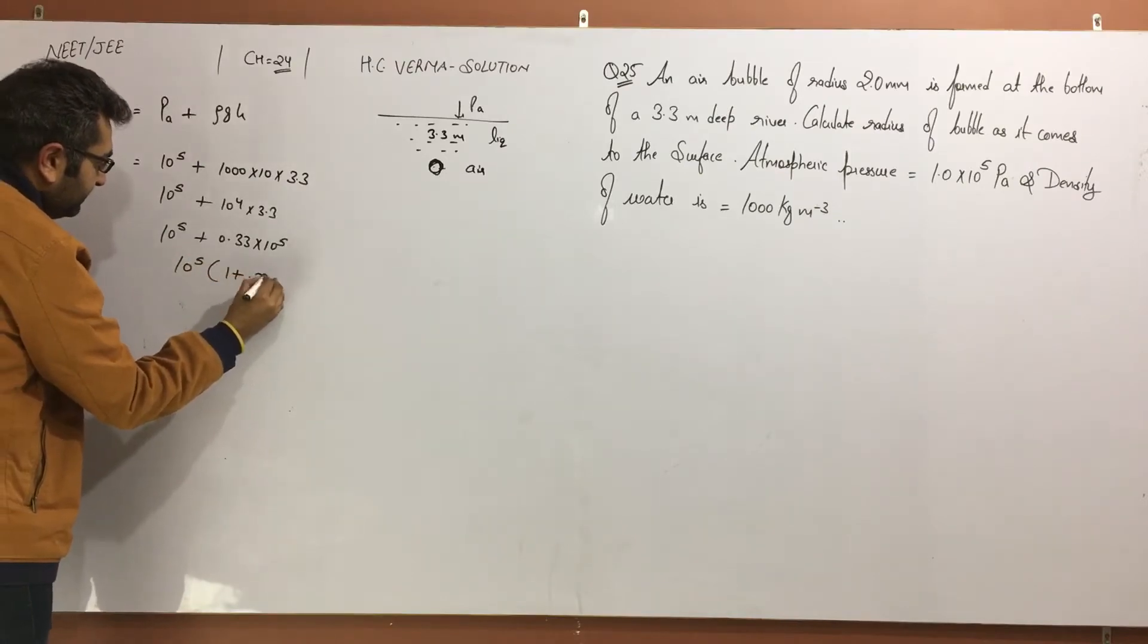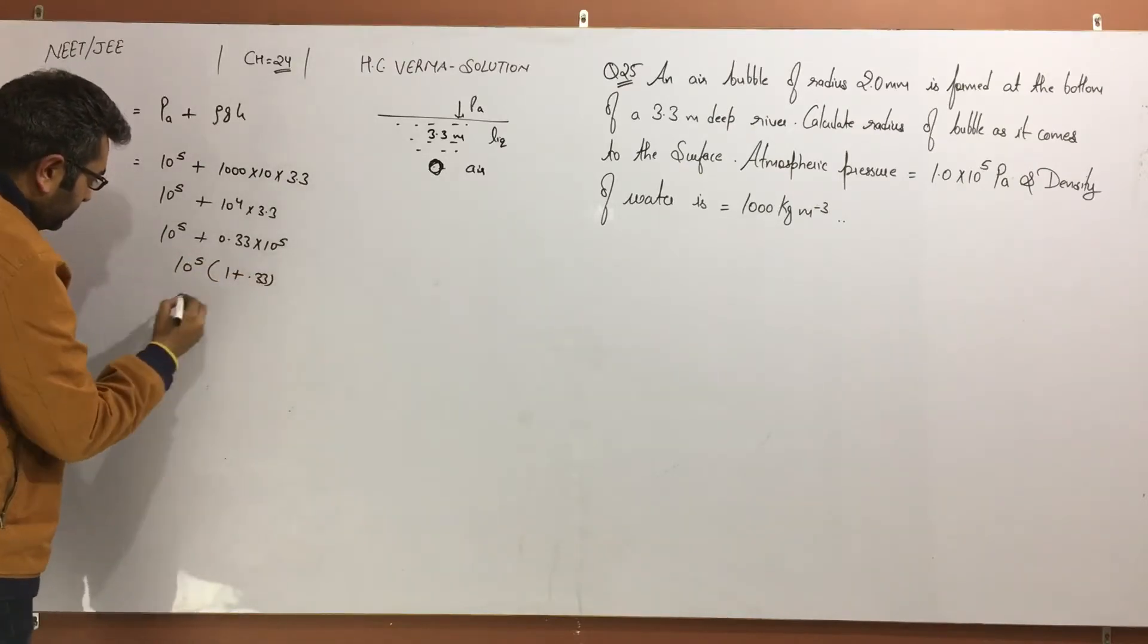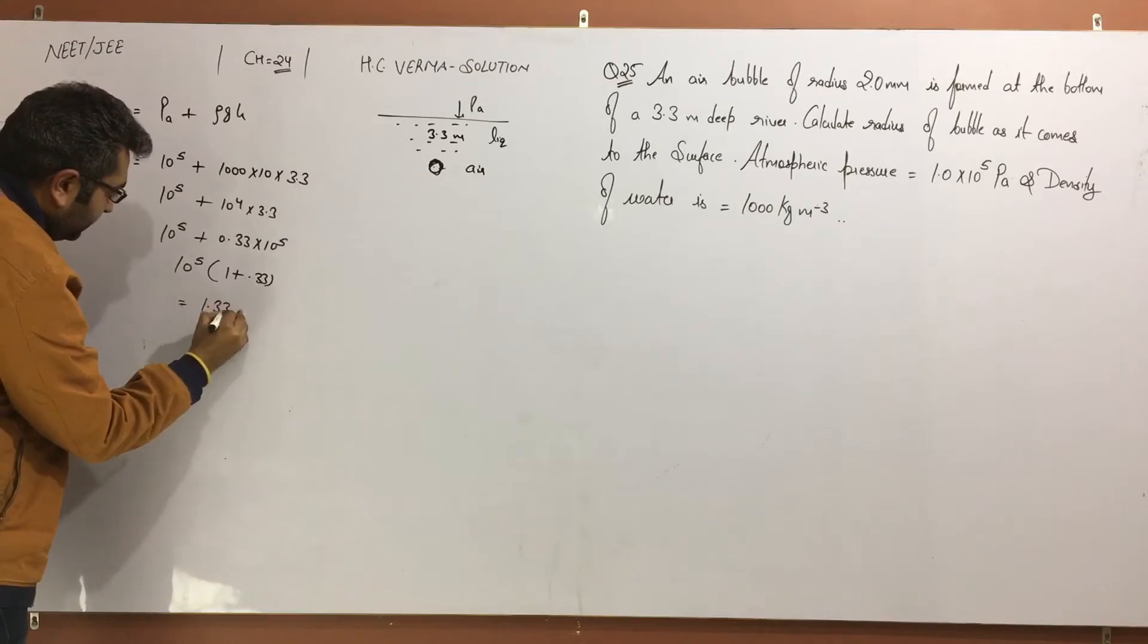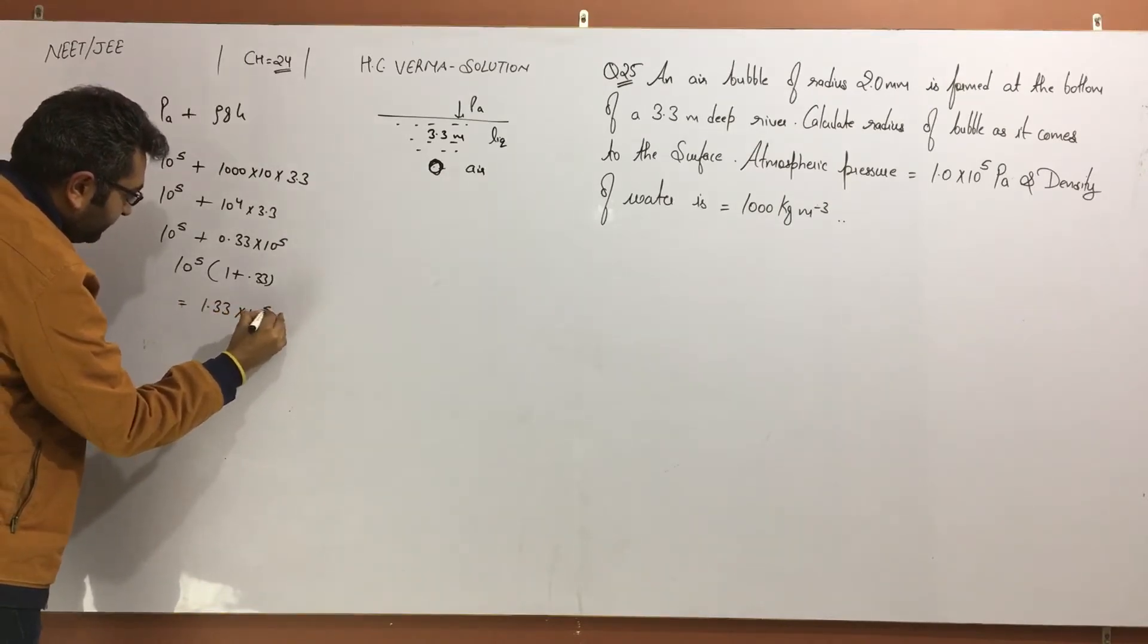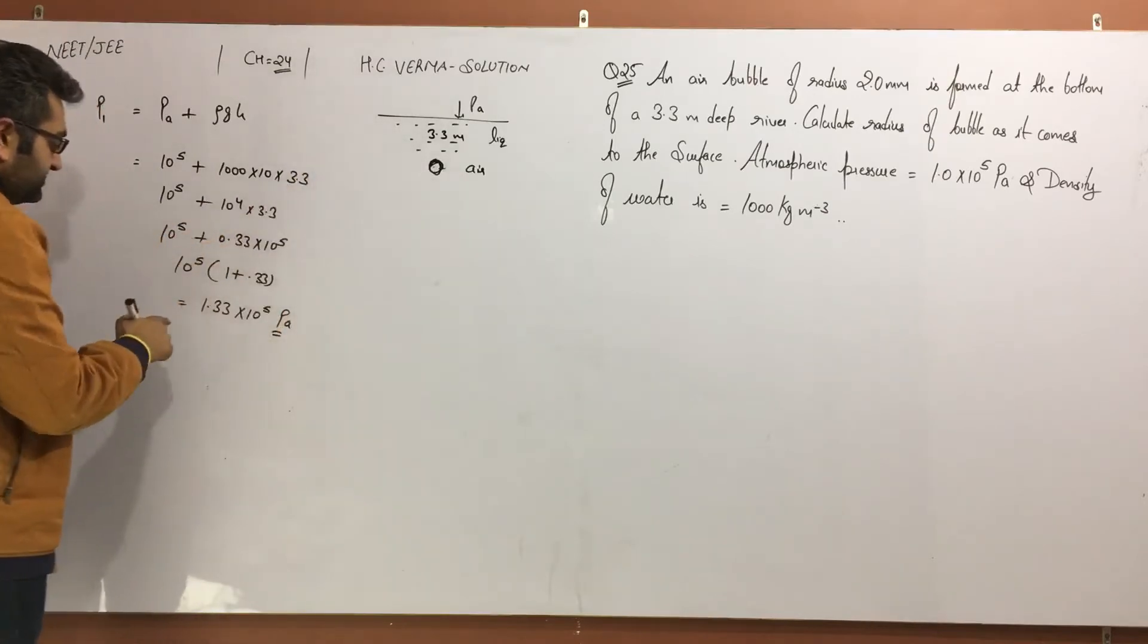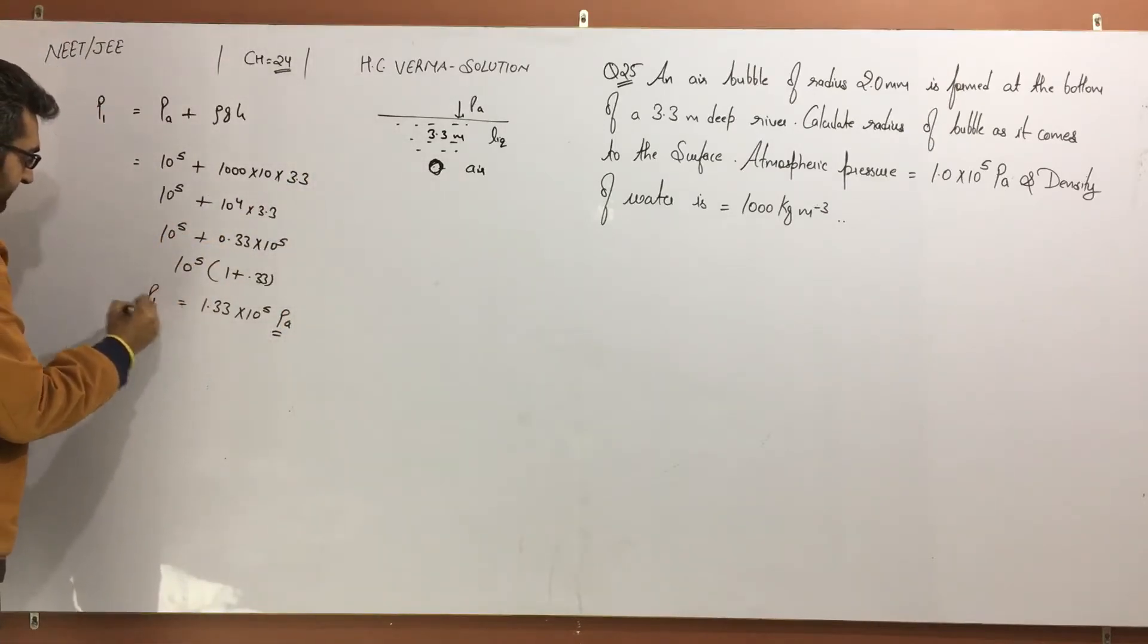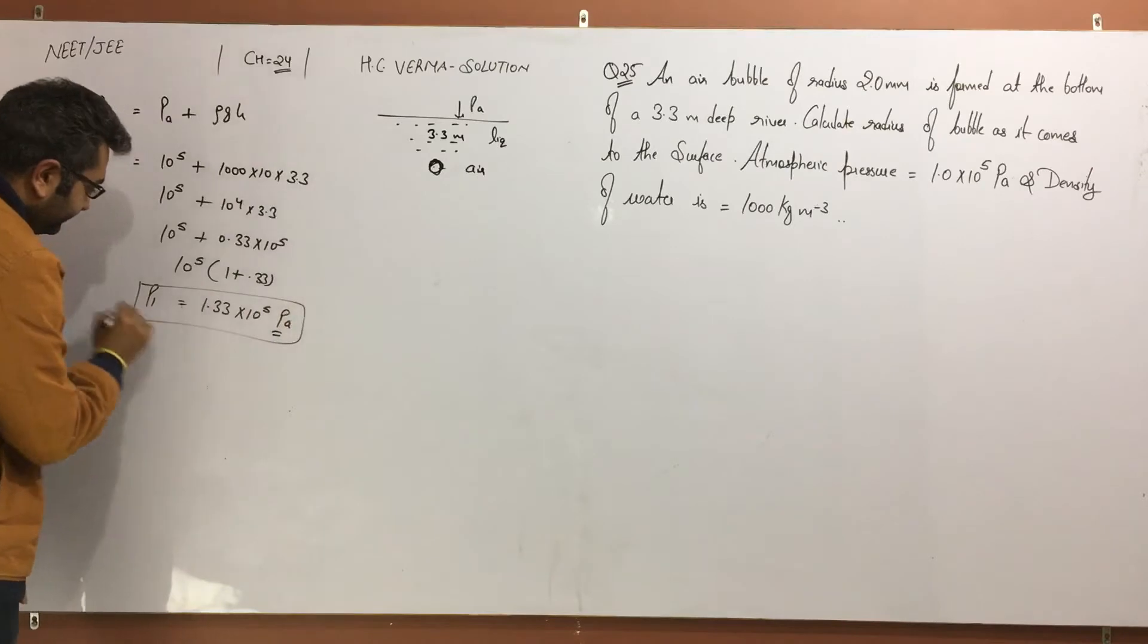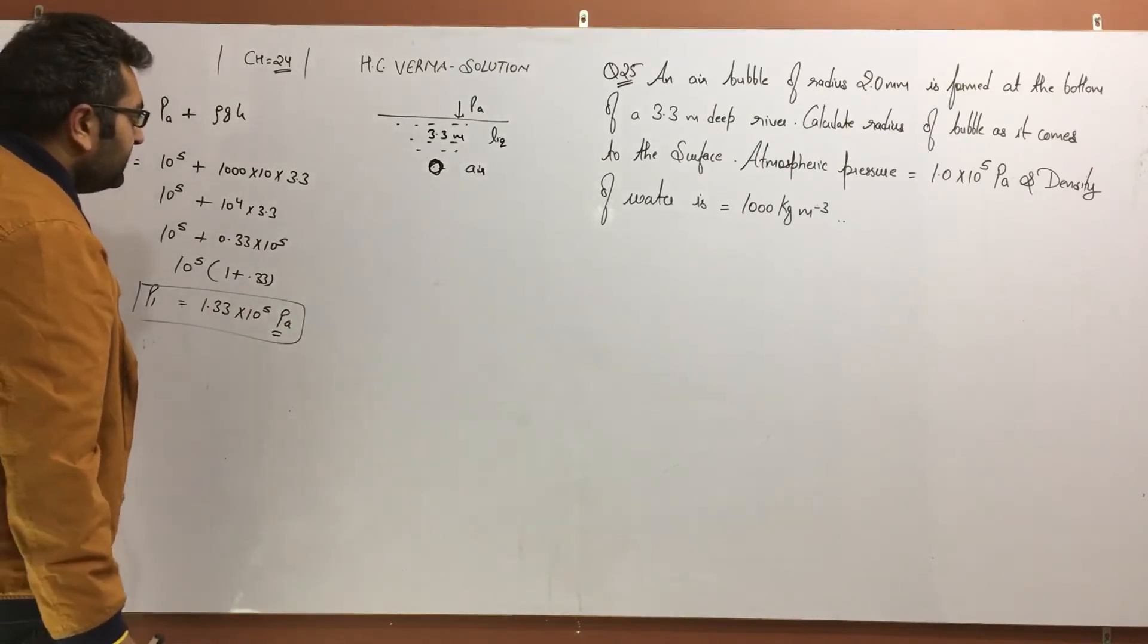When the bubble is inside, the pressure is P1 which is this much. Now let's talk about the second situation where the bubble comes to the surface.